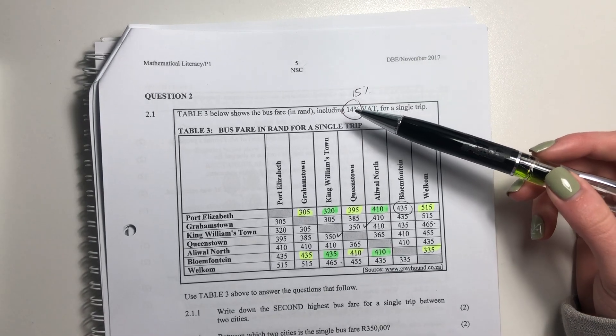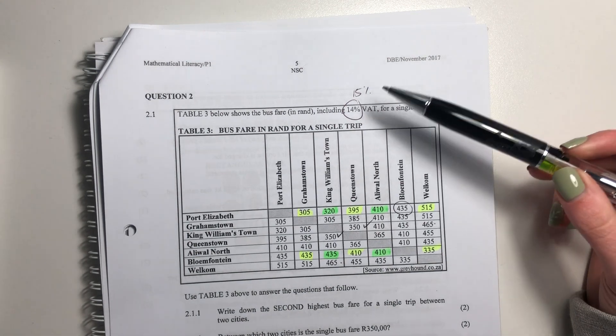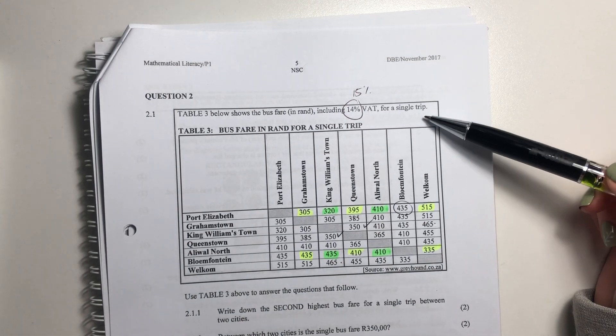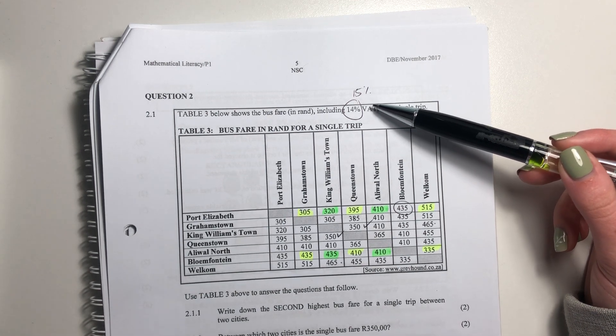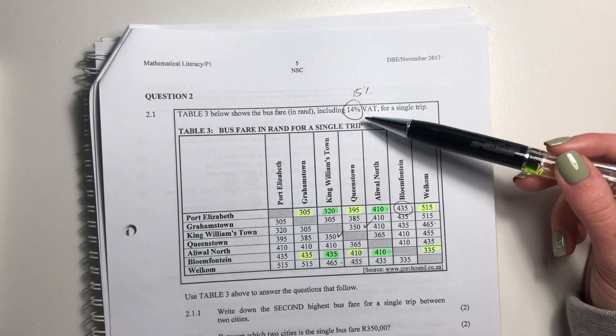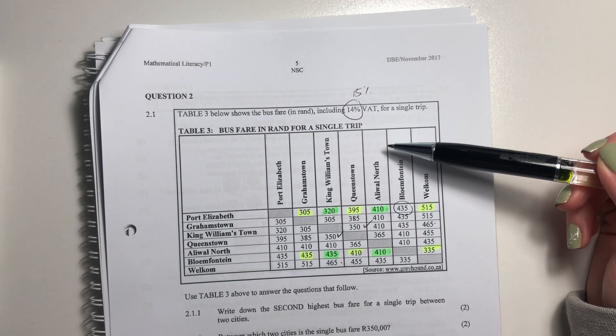Okay, so let's look at question two now. It says table three below shows the bus fare in rands, including 14% VAT for a single trip. Now, I've made a note here for this paper VAT was 14%, but now in 2022 VAT is 15%, and you're expected to know that.